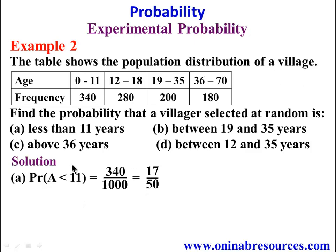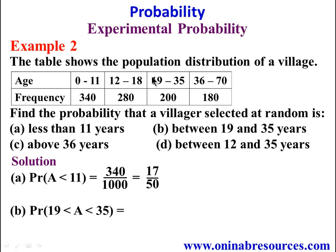So we have the probability of selecting a villager whose age is less than 11 to be 17 over 50. Then we go to problem 2B, that is between 19 and 35 years. The probability that a villager selected at random is between 19 and 35 will be the frequency of the age bracket of 19 to 35, which is 200 over 1000. We have it as 1 over 5 in the simplest form.